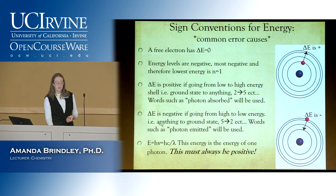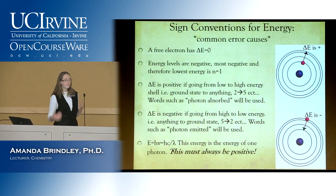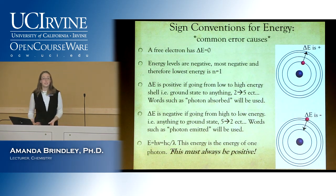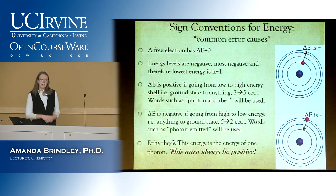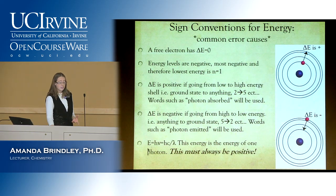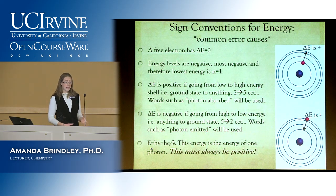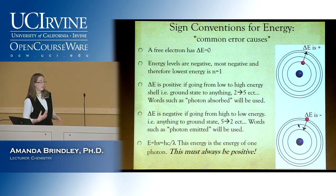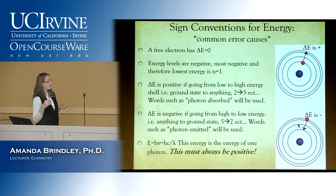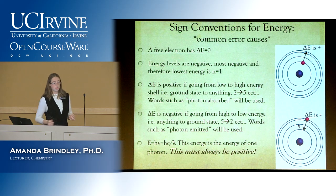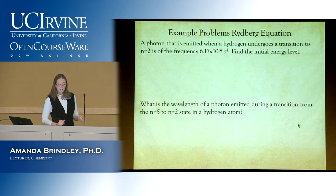Think about the equation E equals h nu or hc over lambda. Frequency and wavelength can't be negative, so the energy of a photon is always going to be positive. Delta E, however, can be positive or negative depending on whether you're absorbing or emitting a photon. This comes into play when we do Rydberg problems.